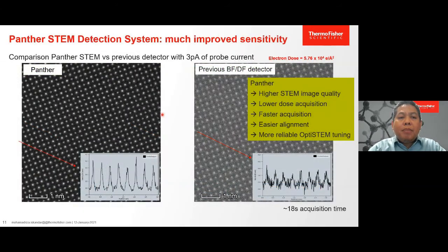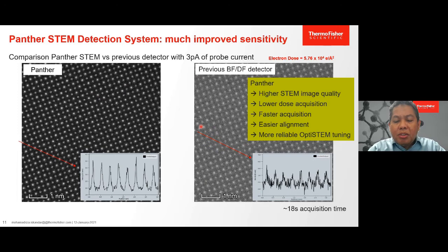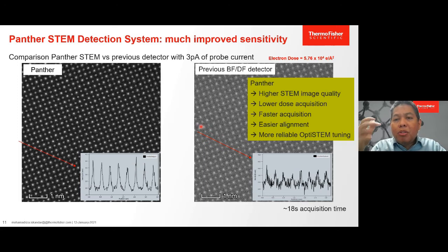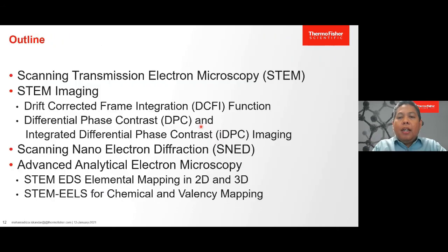We can also see a comparison between the new Panther STEM detectors and the previous detectors at the same probe current of 3 picoamperes. The signal-to-noise ratio is clearly better with the Panther STEM detector. To summarize the first topic: although STEM has many advantages, the signal-to-noise ratio is critical because what we get in the image comes from the scanning process and the detector. Having a good detector is the most important thing to understand regarding STEM imaging.